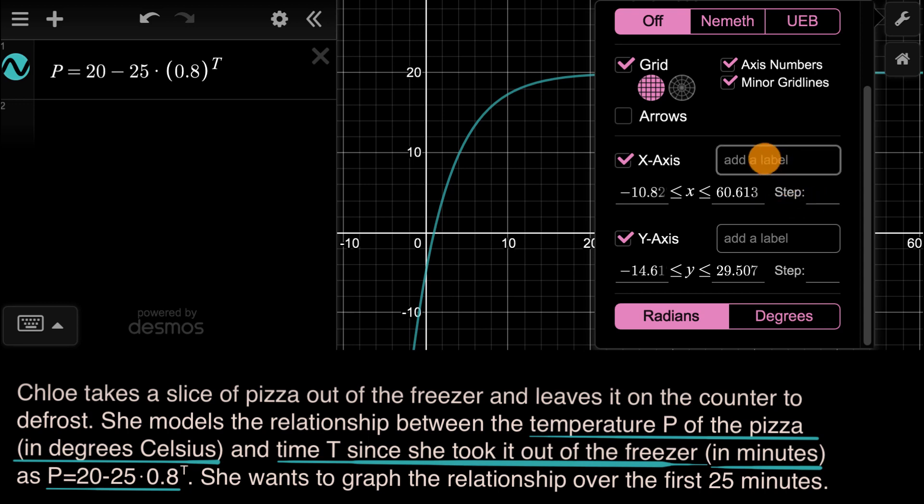And what is it measuring? Well, it says it right over here: it's measuring time T in minutes. So we could write it like this: T, which is measured in minutes.